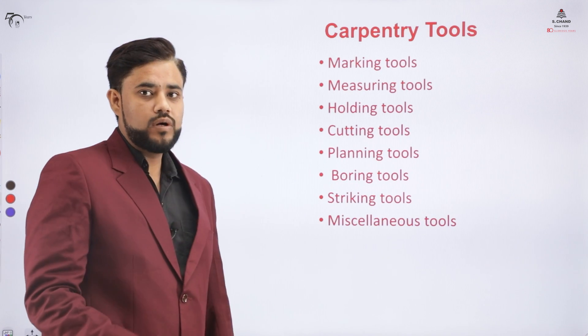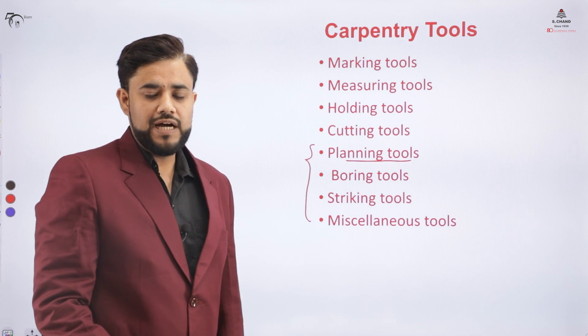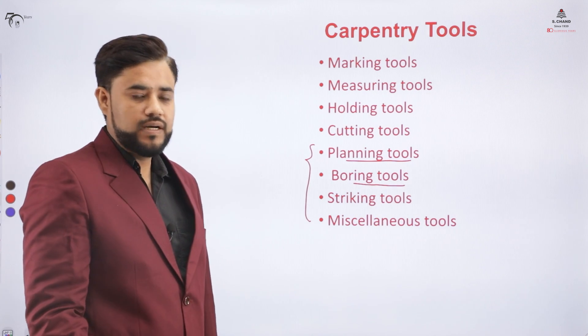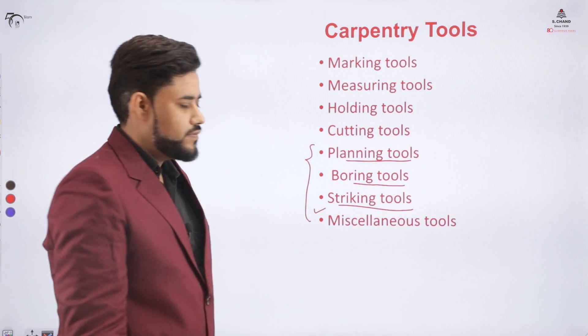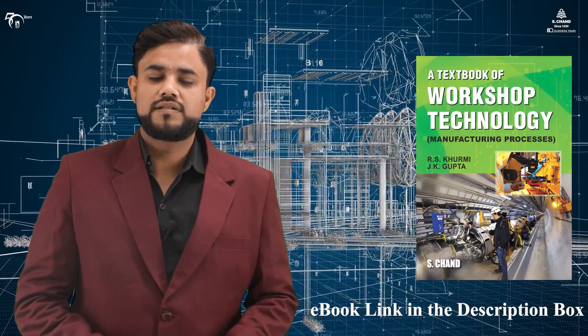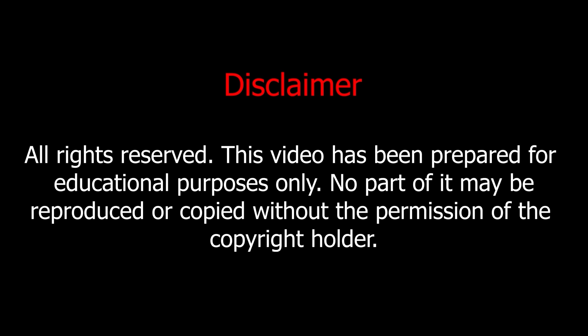In summary, in this video we started with the planing tool, covering the wooden jack plane and metal jack plane. In the boring tool category we covered gimlet and brandle. In the striking tools we covered the mallet and hammer, and lastly the miscellaneous tools including the screwdriver, rasp, and file. This concludes the second part of the video. For detailed conceptual clarity, refer to the book by S.Chan Publishing — the link is in the description. If you find the video interesting, like, share, subscribe to the channel, and hit the bell icon for future updates.